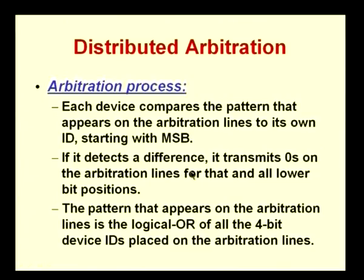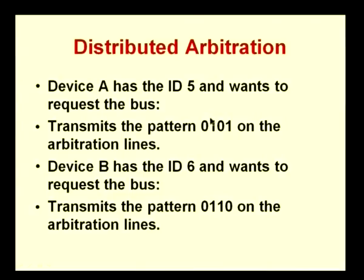When a device puts out a 0, all devices compare whatever is on the arbitration lines with their own IDs. The one whose device ID matches the pattern on the lines becomes the master of the bus — that is the one said to win the bus. Let us look at an example with two devices, A and B, where A has ID 5 and B has ID 6, and both request the bus.